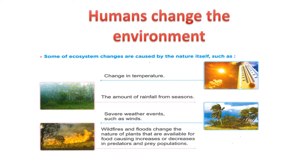If change occurs slowly, which means the change is caused by nature itself, organisms have time to adapt over many generations. But human activity often rapidly changes ecosystems over days or years, and these rapid changes can cause many organisms to move, disappear, die, or even become extinct. Extinct means that a living organism no longer exists on Earth.